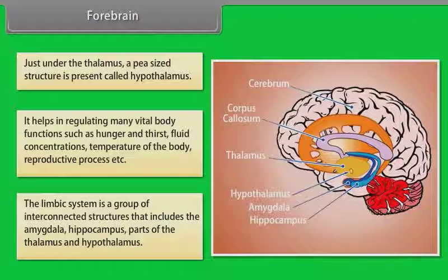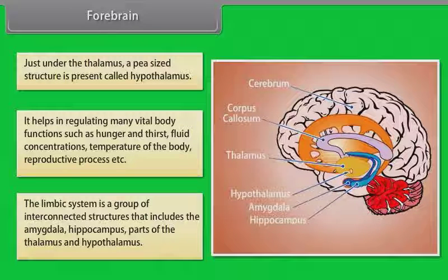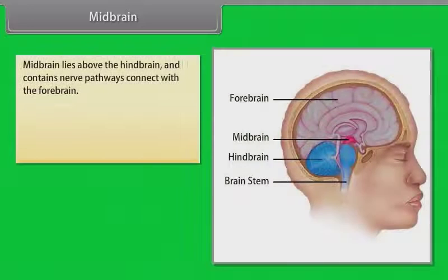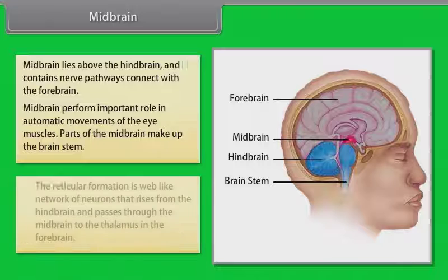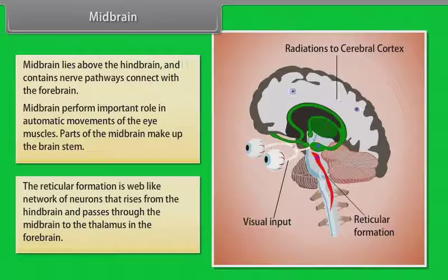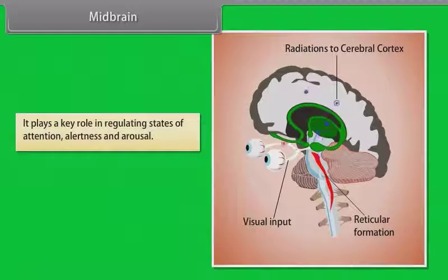The limbic system is a group of interconnected structures that includes the amygdala, hippocampus, and parts of the thalamus and hypothalamus. The midbrain lies above the hindbrain and contains nerve pathways connected with the forebrain. It performs an important role in automatic movements of the eye muscles, and parts of the midbrain make up the brain stem. The reticular formation is a web-like network of neurons rising from the hindbrain through the midbrain to the thalamus, playing a key role in regulating states of attention, alertness and arousal.